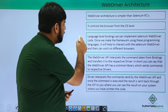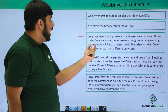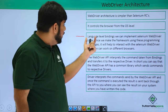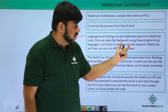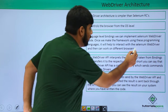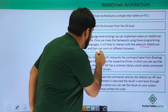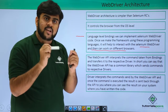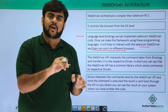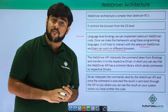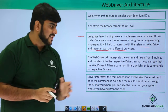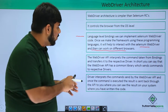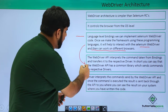Language level bindings are implemented in the WebDriver code. Whatever framework we build using a programming language helps the WebDriver work on different browsers. For example, writing 'WebDriver driver = new FirefoxDriver()' is actually binding the framework with the WebDriver API.